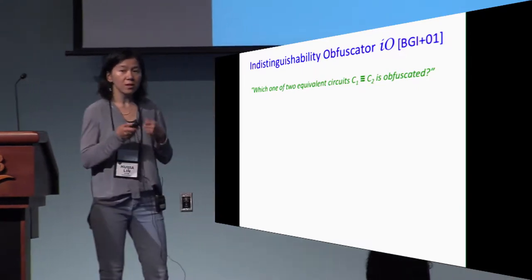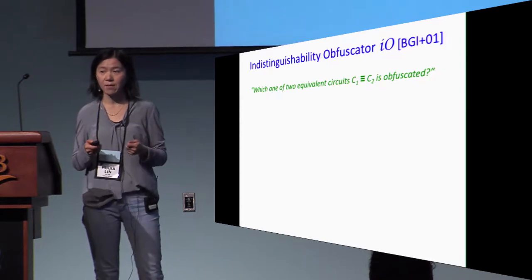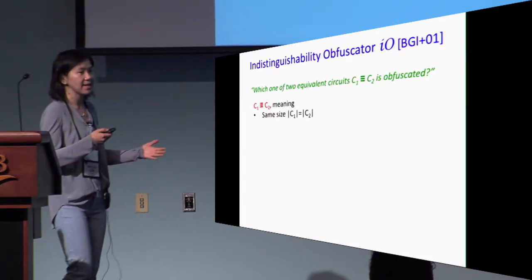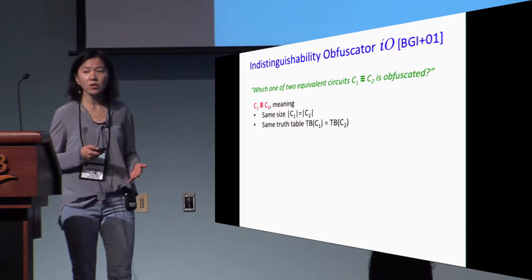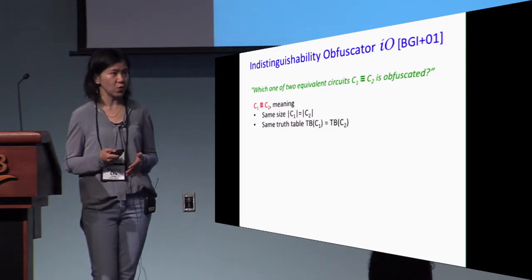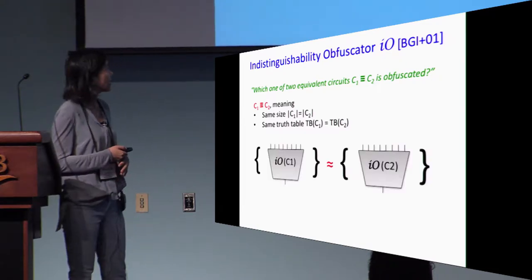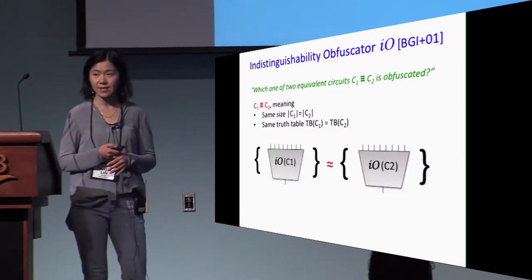By equivalent, we mean that the two circuits should have the same size and they should have the identical truth table. If that's the case, then we want the obfuscated circuits to be computationally indistinguishable.